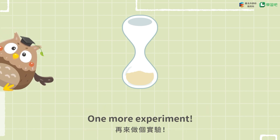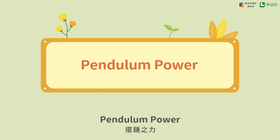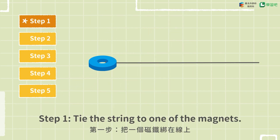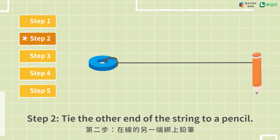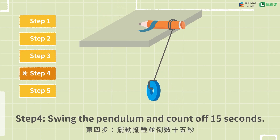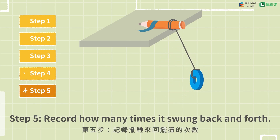One more experiment: Pendulum Power. Materials: some magnets, a piece of string, some tape, and a pencil. Step 1: Tie the string to one of the magnets. Step 2: Tie the other end of the string to a pencil. Step 3: Use tape to stick the pencil on the table. Step 4: Swing the pendulum and count off 15 seconds. Step 5: Record how many times it swung back and forth.